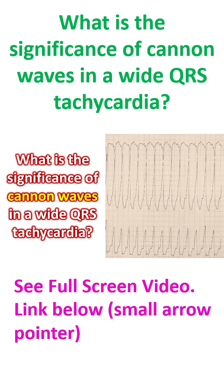Close observation of the jugular venous pulse for cannon waves can give a clue to the ventricular origin of the tachycardia. Cannon waves occur when the atria contract against closed atrioventricular walls. This occurs in ventricular tachycardia, which does not usually have atrioventricular synchrony. Irregular cannon waves in the jugular venous pulse indicate ventricular tachycardia with AV dissociation.